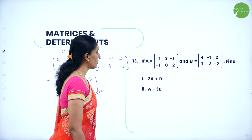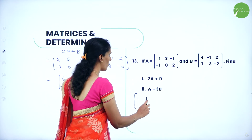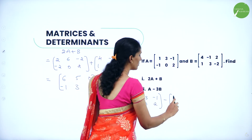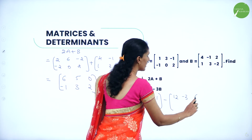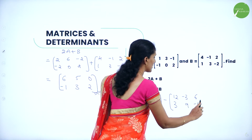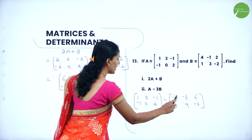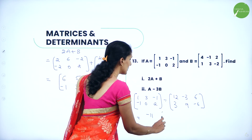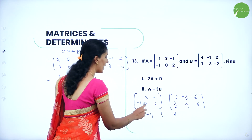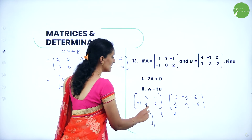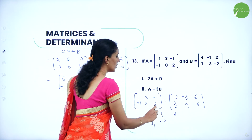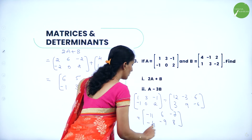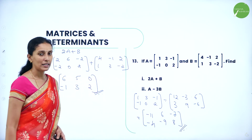Next question: if A = [1, 3, -1; -1, 0, 2] and B = [4, -1, 2; 1, 3, -2], find 2A plus B and A minus 3B. For 2A plus B: 2A = [2, 6, -2; -2, 0, 4] plus B = [4, -1, 2; 1, 3, -2], giving [6, 5, 0; -1, 3, 2]. For A minus 3B: 3B = [12, -3, 6; 3, 9, -6]. So A - 3B = [1-12, 3-(-3), -1-6; -1-3, 0-9, 2-(-6)] = [-11, 6, -7; -4, -9, 8].